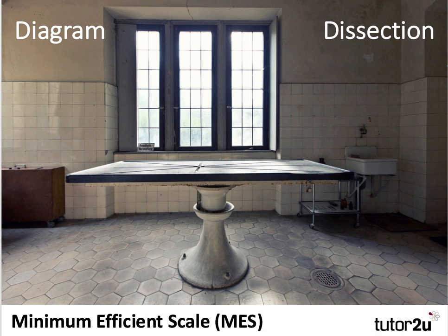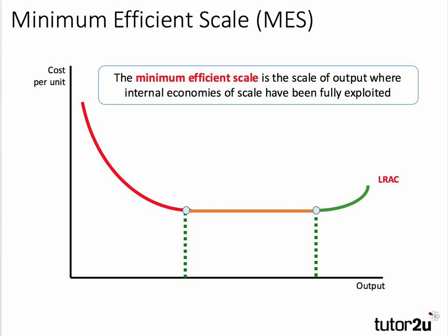Let's work through the diagram. Here would be a typical long run average cost curve that one could draw. It maps the path of cost per unit against output as a business internally expands in the long run. The red portion is where the economies of scale are — when average costs are falling, economies of scale or increasing returns are being achieved.